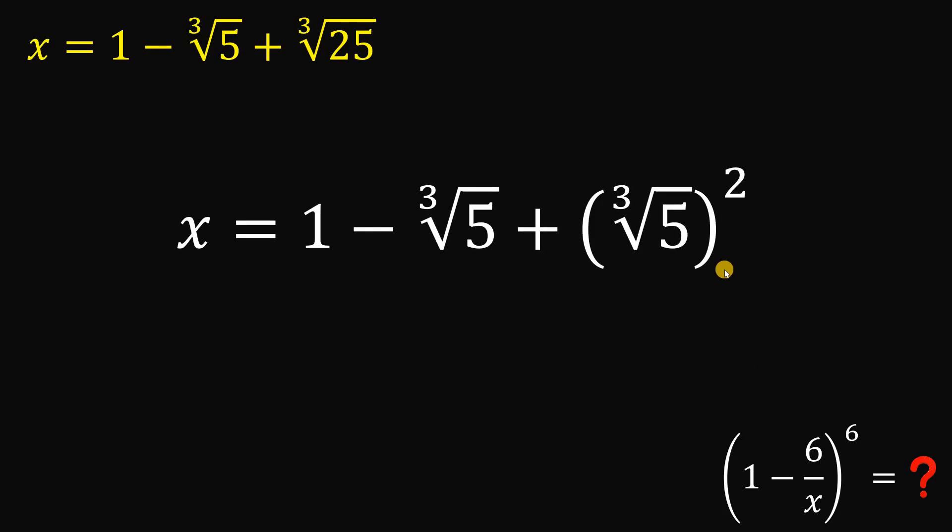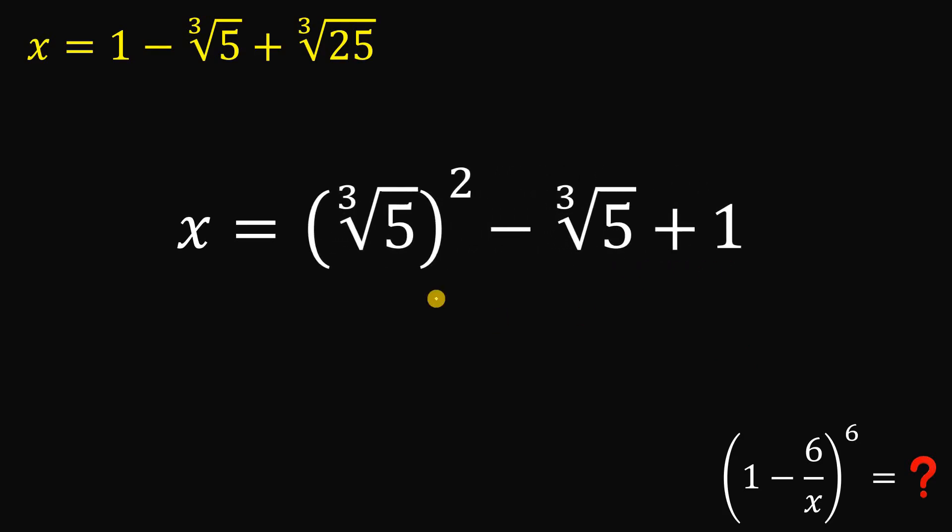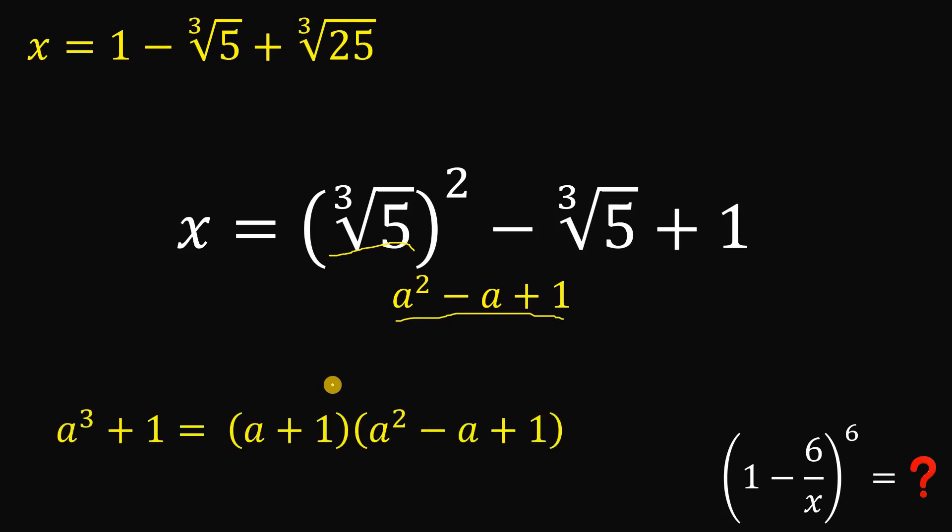Now from here, let's rearrange some terms a little bit because if we let cube root of 5 as a variable a, we get something like a squared minus a plus 1. And this expression is very familiar because if we factor a cubed plus 1, we get its factored form as a plus 1 multiplied by a squared minus a plus 1, which is the sum of 2 cubes.